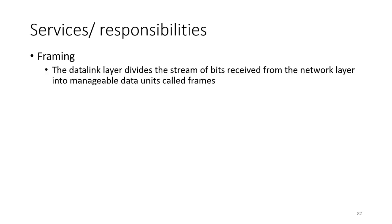The first one is framing. The data link layer divides the stream of bits received from the network layer into manageable data units, and those data units are known as frames.